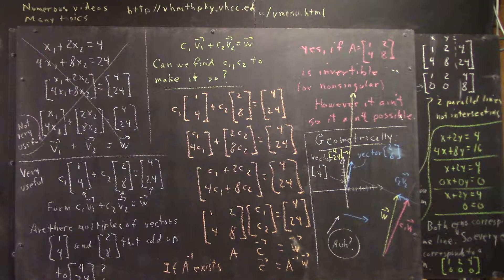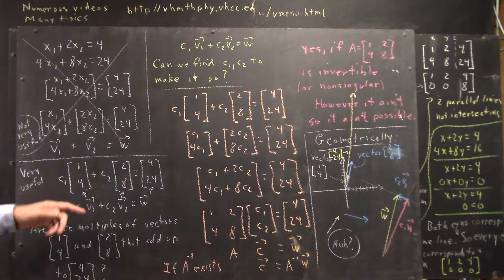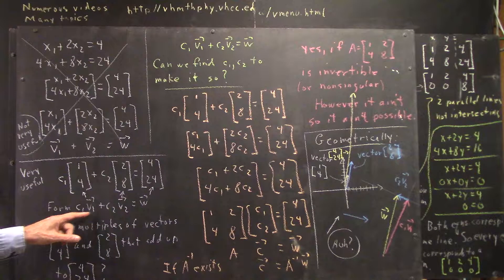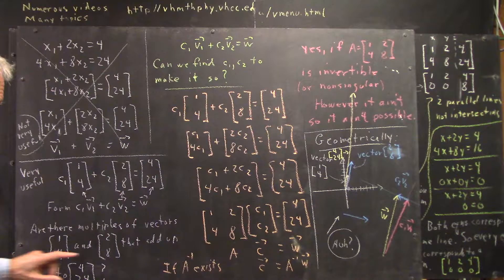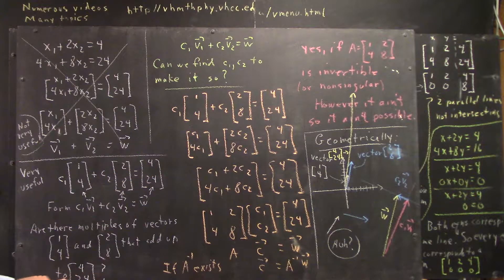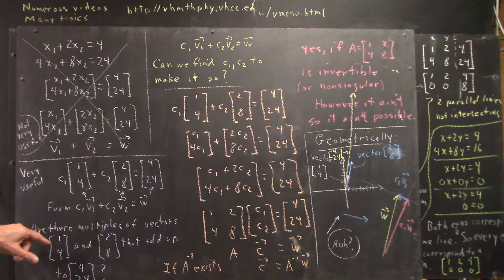So we have this vector equation. The answer to this vector equation is either we can find a c1 and c2 that make it so, or we can't. The question we're answering with this equation is: are there multiples of the vectors v1 and v2, which are these vectors, that add up to our vector w, which is this vector?